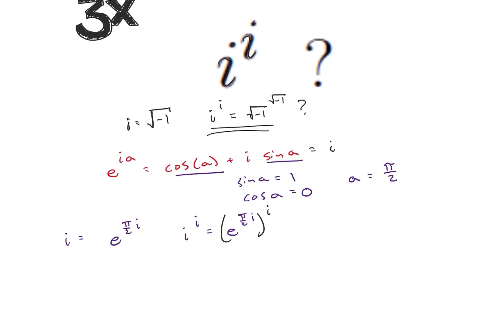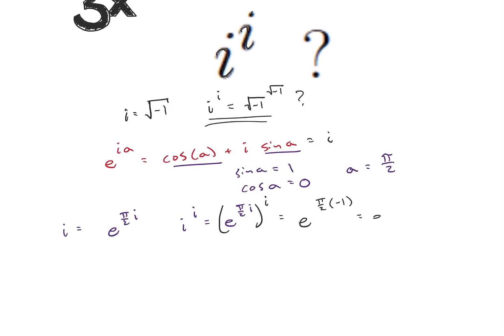So I can go ahead and distribute that. So I'm going to get e to the pi over 2 times negative 1 because i squared is negative 1, which is e to the negative pi over 2.